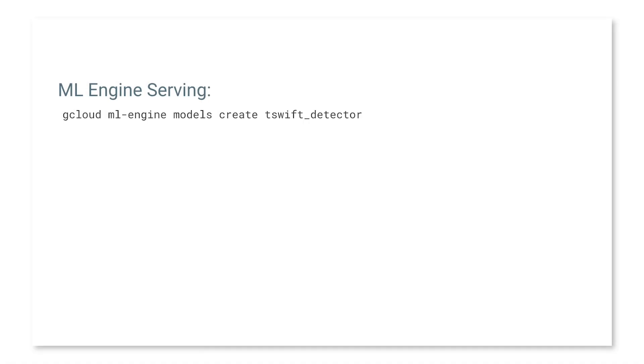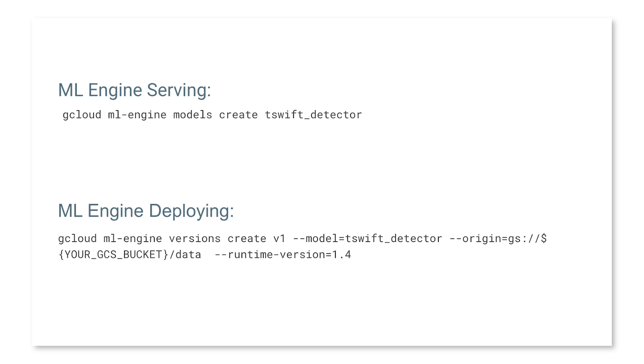Once training is done, you have a model checkpoint — a binary file similar to the pre-trained model checkpoint used to start training, but now updated with all of your training data. To serve it, I use a gcloud command with ML Engine to deploy my model, pointing it at where those checkpoint files are. In just a couple of minutes, the model is available for serving and generating predictions.